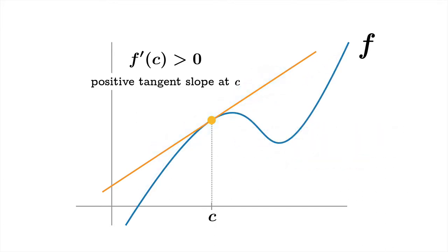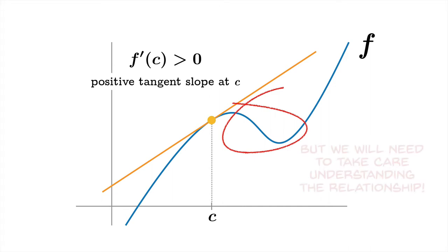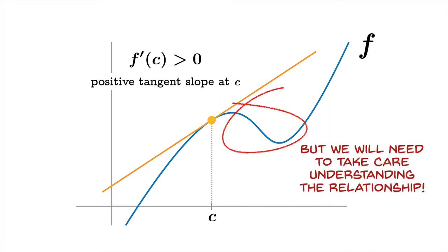Now clearly we have to be a little bit careful about this. Just because the derivative is positive in one place doesn't mean that right next door to it there could be some decreasing behavior. So there has to be some sort of explicit relationship between where the derivative is positive or negative and where the function is increasing or decreasing. So we're going to square away some of those details in this video.